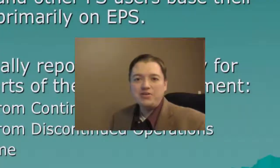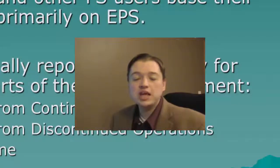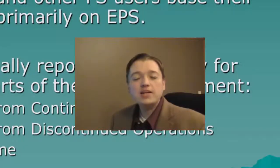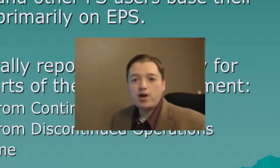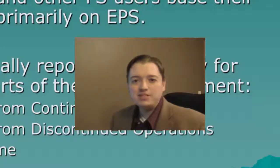Welcome back to our intermediate financial accounting course. Over the last few segments we've been talking about the income statement — what it is, why it's important, how to build a multi-step income statement, what versions under IFRS and US GAAP look like, adjustments for changes in estimate, changes in principle, discontinued operations, and extraordinary items. We've talked about a statement of retained earnings and comprehensive income. Now it's time to wrap up this discussion by talking about three important ratios from the income statement.